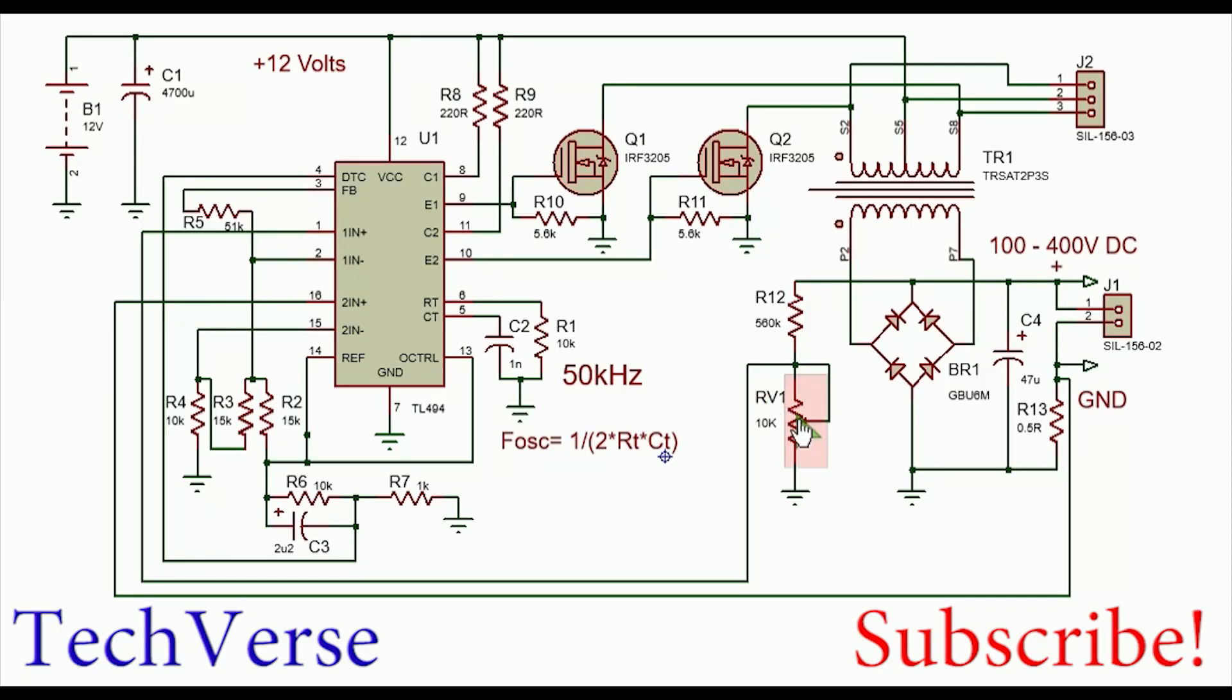By changing the position of potentiometer RV1, you can adjust the output voltage to any desired value. The output voltage in AC will not vary, but the on-time will vary, meaning that the output power is the one which will be varied. If you have a DC output, it will be completely variable from a variety of ranges, from about 50 to 320 volts.